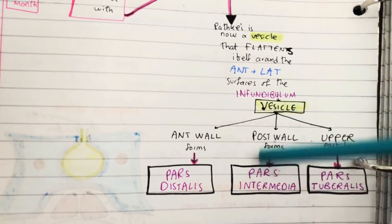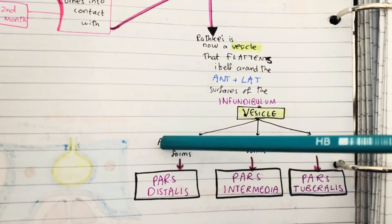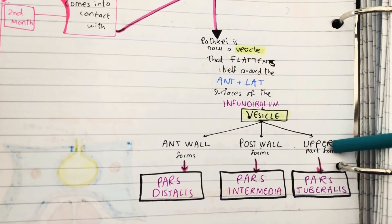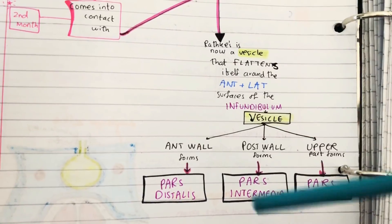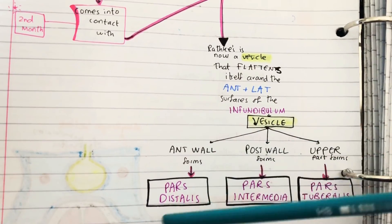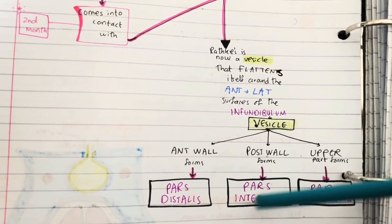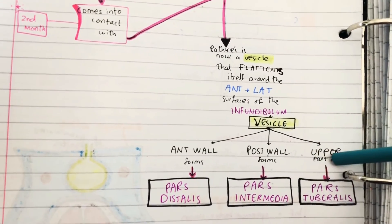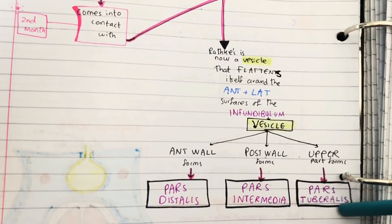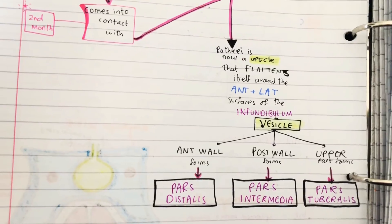Now the vesicle, as you can see, has different parts that form different things. The anterior wall forms the pars distalis, the posterior wall forms the pars intermedia, and the upper part forms the pars tuberalis - basically a tube thing, the little attachment thing. That is basically it for the development of the pituitary gland.